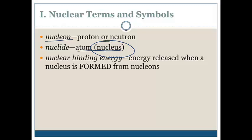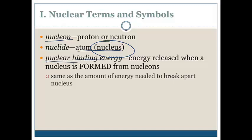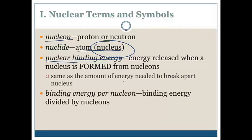A nuclide is any particular atom, or more specifically, the nucleus of the atom. Nuclear binding energy, this is energy released when a nucleus is formed from nucleons. In other words, when protons and neutrons actually come together, energy gets released.